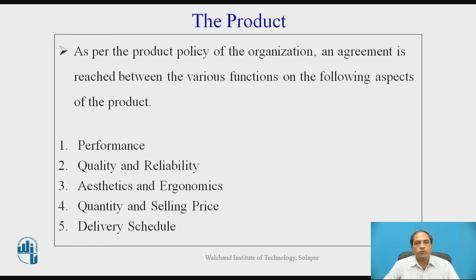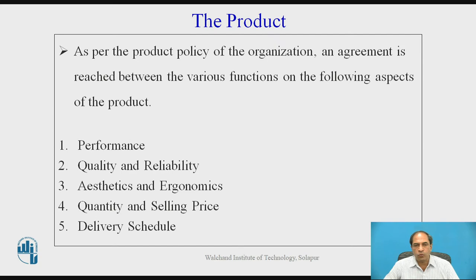When we think about the product, there are various aspects: performance of the product, quality and reliability, aesthetics and ergonomics, quantity and selling price, and the delivery schedule. This is about achieving optimization. If you try to maximize one thing, it will probably have an adverse impact on another — for example, if we increase reliability and require a higher level of quality, it may result in higher cost.